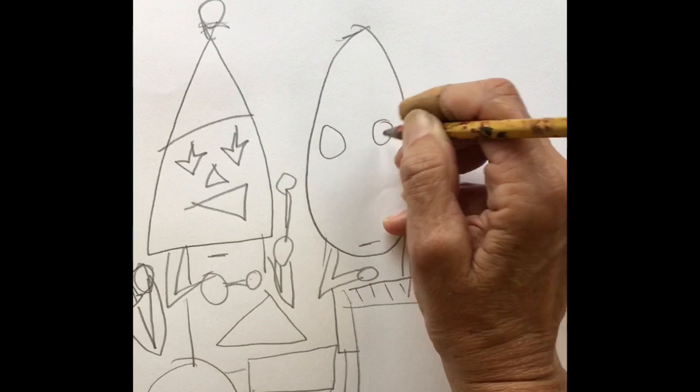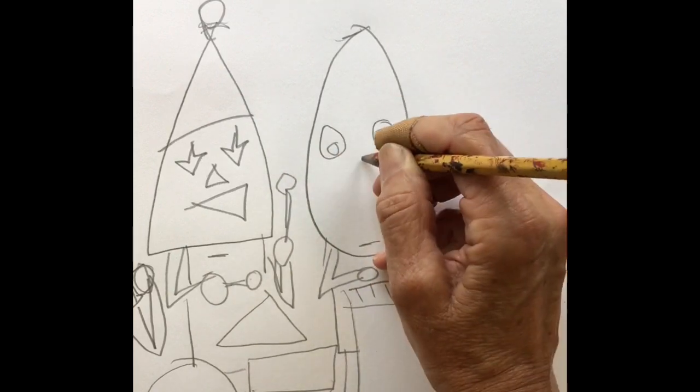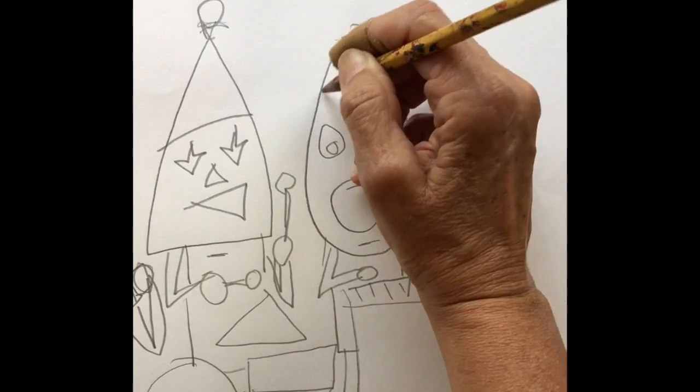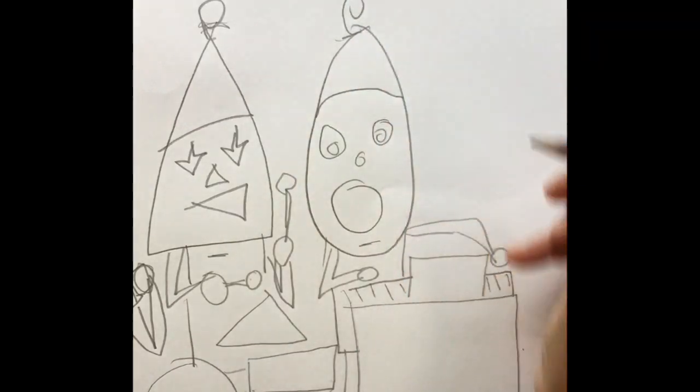This one will have circle eyes and circle nose and a circle mouth. And he's going to have a hat too. Give him a pom-pom on his hat.